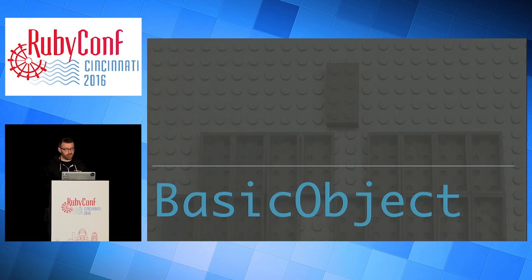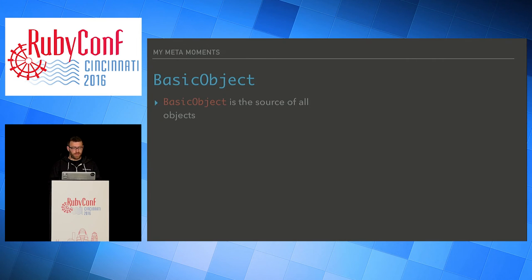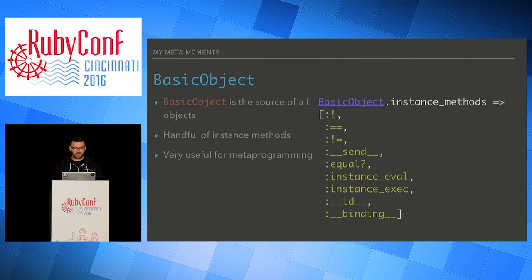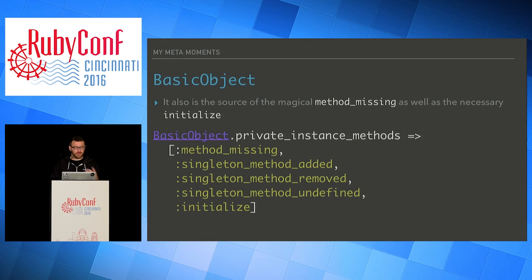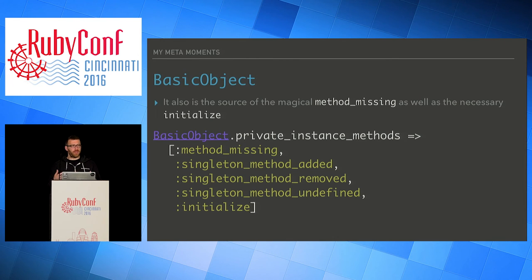BasicObject is the source of all objects. It only has a handful of instance methods, which makes it very useful for metaprogramming. Three of them begin with double underscore — they're kind of private internal methods. It's mostly a blank slate to work with. It's also the source of the magical method_missing as well as initialize, which are private instance methods on BasicObject. Object has about 56 methods, while BasicObject has around 9, which tells you how small and pared down it is versus the normal object you interact with.